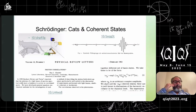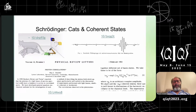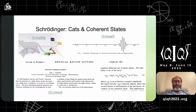I want to take you through a bit of the history — a potted history of what's going on with cat states. On the upper left you can see a picture from Wikimedia depicting Schrödinger's cat, which is famously said to be in a superposition of dead and alive.